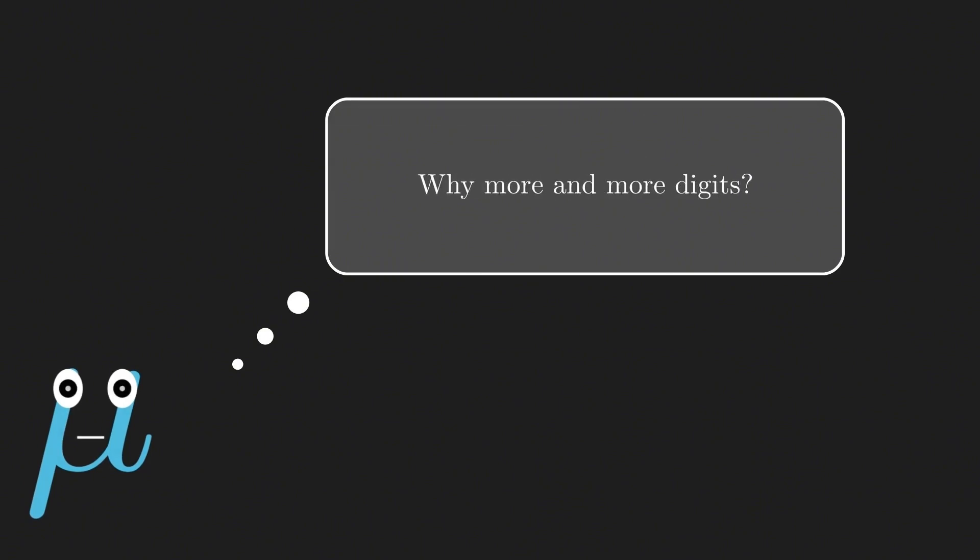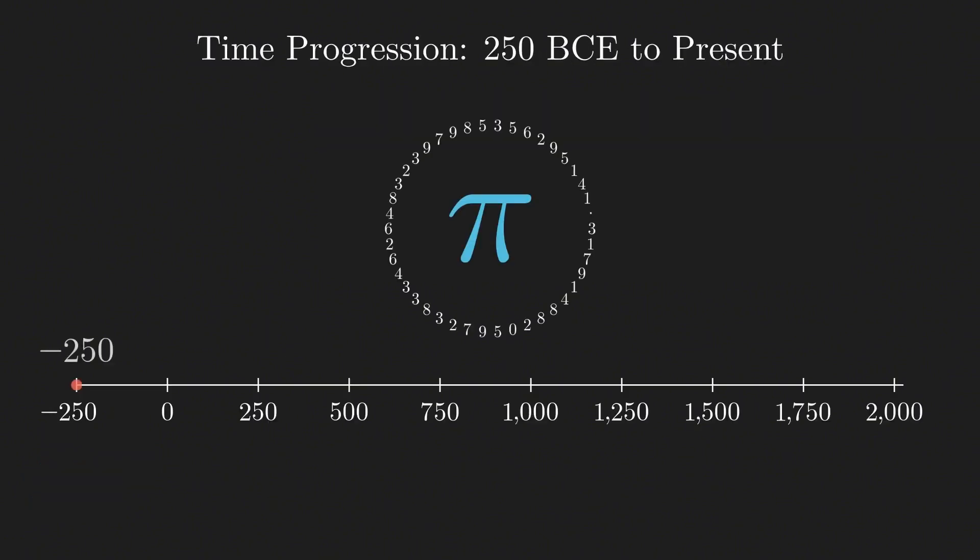And why do we even need to compute more and more digits? While computing Pi isn't just about math for the sake of math, there is much bigger reason behind it. And that's what exactly we will explore in this video. To understand why Pi is important and why we keep changing more and more digits of Pi, we have to look back in time. The journey of Pi discoveries span thousands of years and we can divide its history into three main eras.